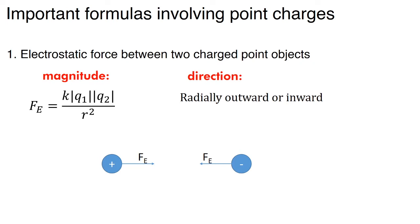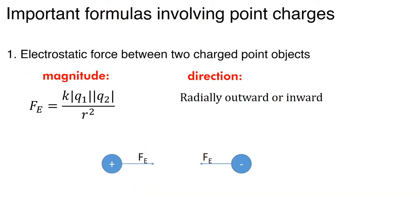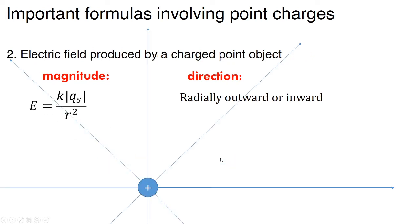This is the first equation that we ever learned — the important formulas involving point charges. The first is Coulomb's law, or the electrostatic force between two charged objects. The second is the electric field produced by a charged point object; its magnitude is kQs over r squared, and its direction is radially outward, or radially inward if the source charge is negative.